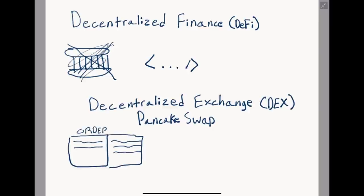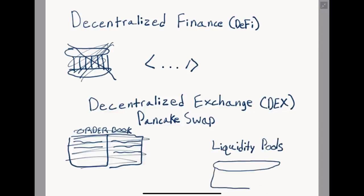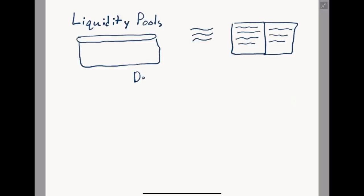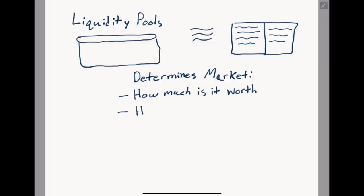PancakeSwap is an example of a decentralized exchange or DEX where there is no order book model. Instead, these exchanges rely on liquidity pools to determine the price and availability of assets they list. Liquidity pools are basically the order book of decentralized exchanges — they determine the market, how much an asset is worth, and how easily you can buy or sell it at a fair market value.